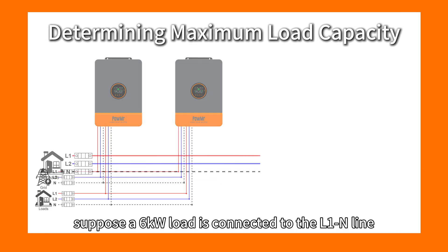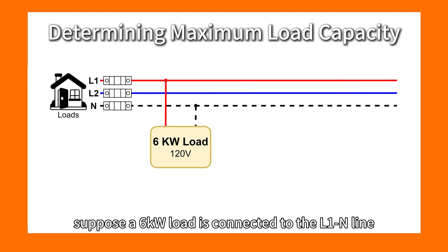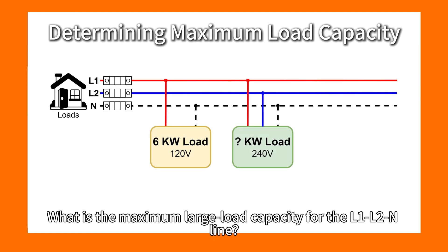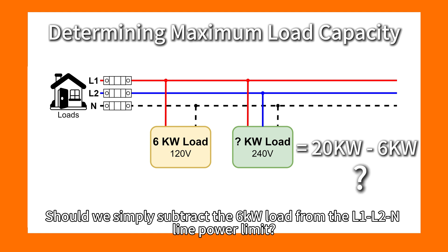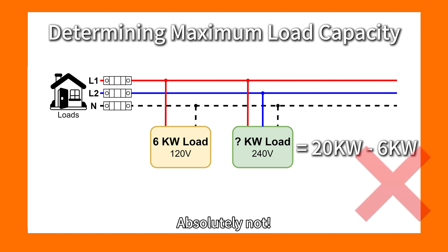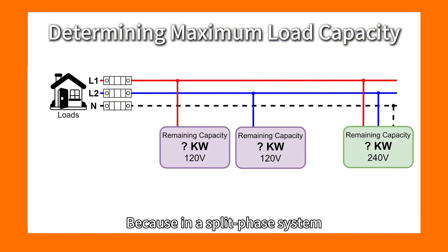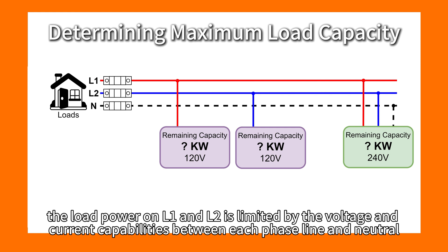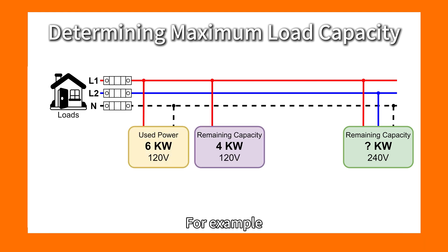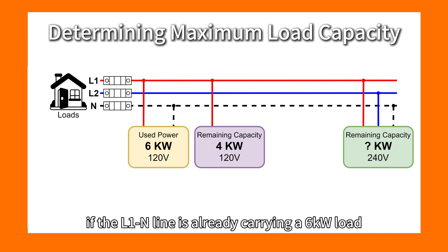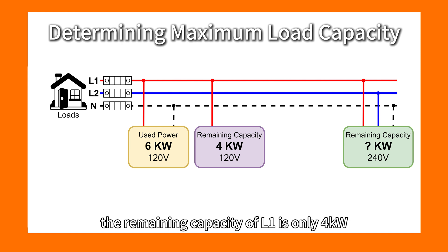Now suppose a 6kW load is connected to the L1-N line. What is the maximum load capacity for the L1-L2 line? Should we simply subtract the 6kW load from the L1-L2 line power limit? Absolutely not. Because in the split-phase system, the load power on L1 and L2 is limited by the voltage and current capabilities between each phase line and the neutral. If the L1-N line is already carrying a 6kW load, the remaining capacity of L1 is only 4kW.